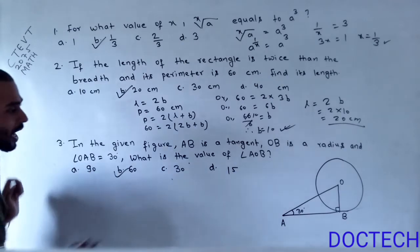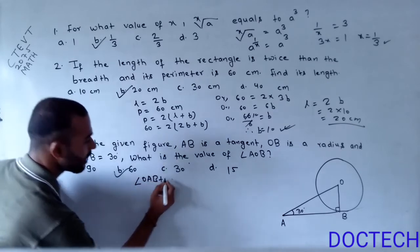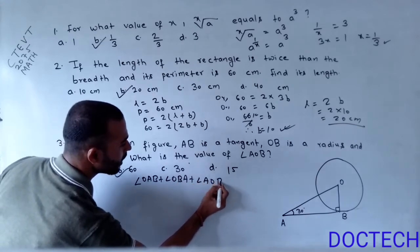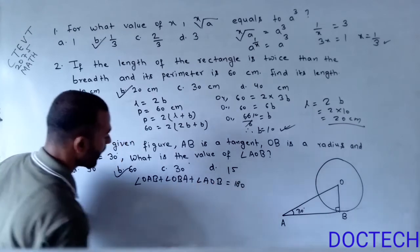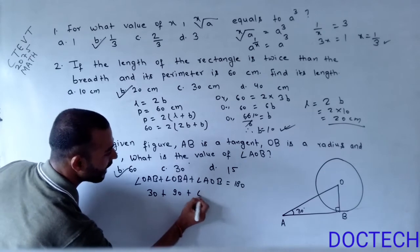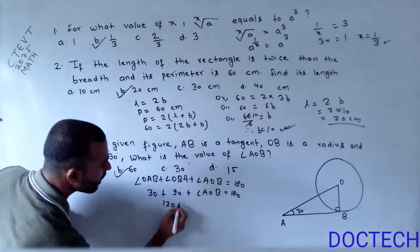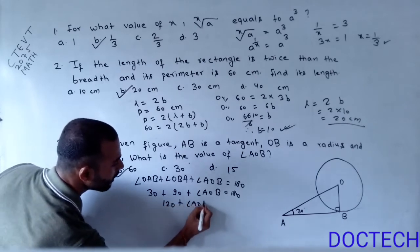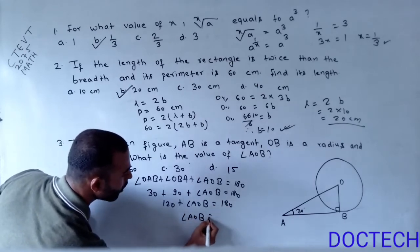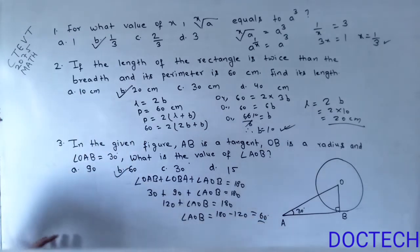Angle OAB plus angle OBA plus angle AOB equals 180 degrees. OAB equals 30 degrees, OBA equals 90 degrees. So, 120 plus angle AOB equals 180 degrees. Therefore, angle AOB equals 180 minus 120, which equals 60 degrees. The answer is 60 degrees.